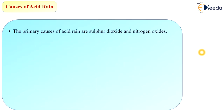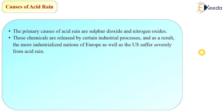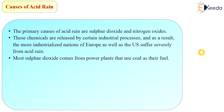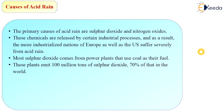The primary causes of acid rain are sulfur dioxide and nitrogen oxides. These chemicals are released by certain industrial processes, and as a result, the more industrialized nations of Europe and the US suffer severely from acid rain. Even in India, people face problems because of acid rain, and some important structures are deteriorating. Most sulfur dioxide comes from power plants using coal as fuel — these plants emit 100 million tons of sulfur dioxide, which is 70% of that in the world.